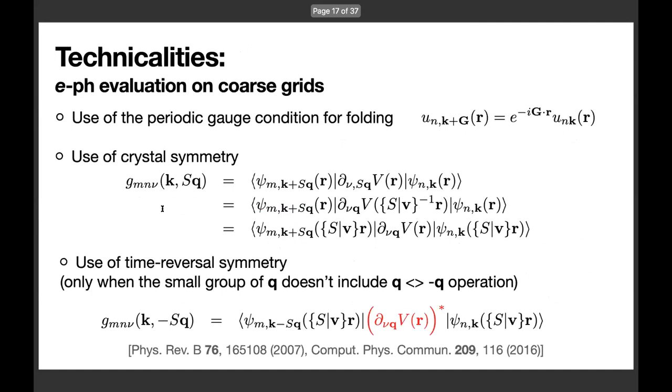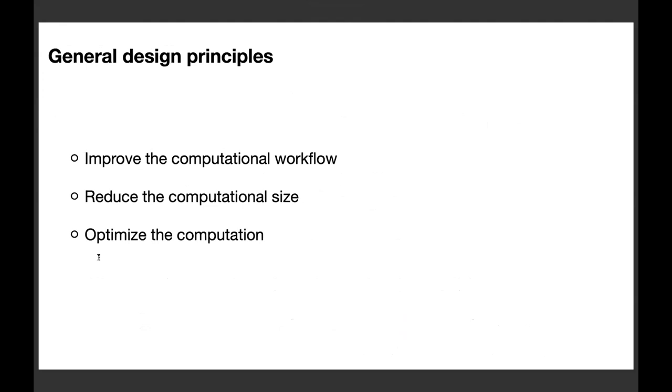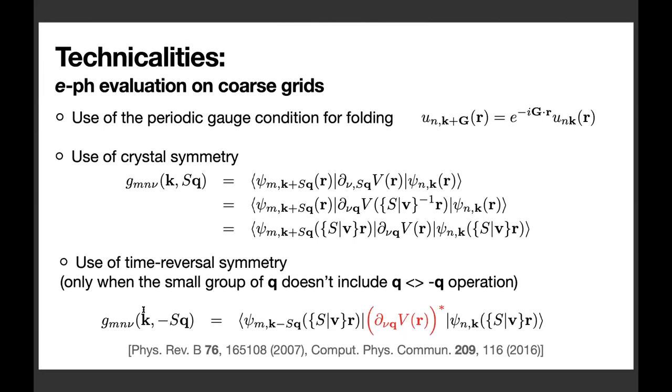As I already mentioned, for efficient evaluation of electron phonon vertex on coarse grid, the periodic gauge condition, crystal symmetry, and lastly the time-reversal symmetry are employed. But regarding time-reversal symmetry, it is not always used. For example, time-reversal symmetry is used only when small group of q points does not include the operation which transforms q to minus q. For this reason, time-reversal symmetry is not used in the centro-symmetric system. And even for non-centro-symmetric system, it is not used depending on the little group of q points.